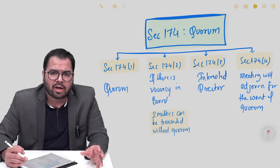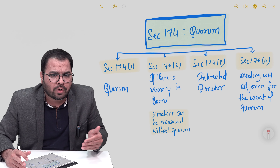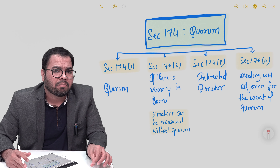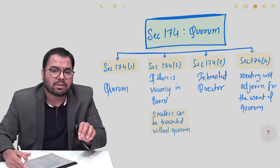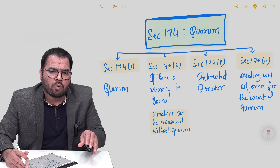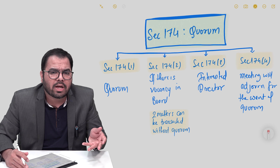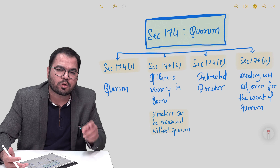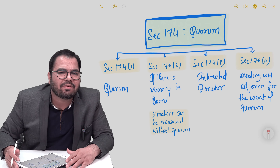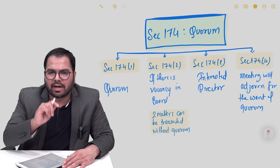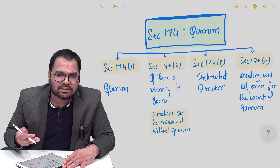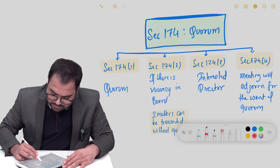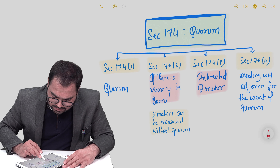Since there is a conflict of interest — the director has a personal stake — whosoever director is interested in any particular resolution of the board meeting cannot discuss it and cannot vote on it. There is a possibility that because of interested directors, the quorum cannot be formed. Section 174 subsection 3 deals with that scenario. We will evaluate each subsection in detail.